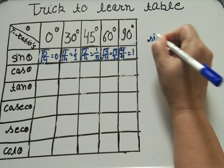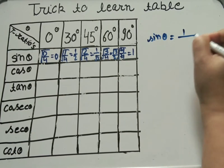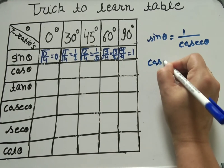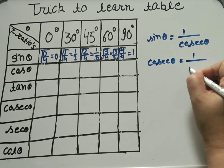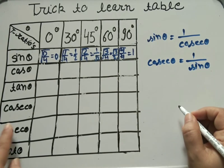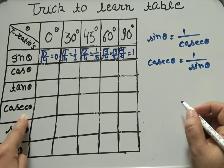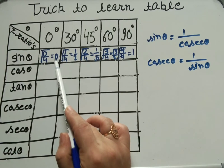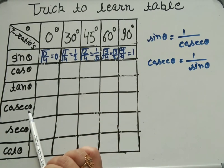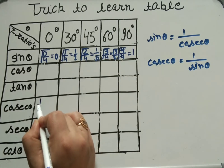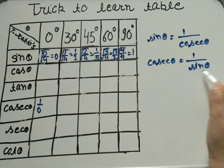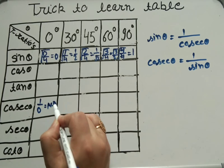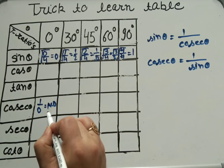In the last lecture we discussed that the reciprocal of sin theta is 1 upon cosecant theta, so cosecant theta equals 1 upon sin theta. For cosecant at 0 degrees: sin theta is 0, so cosecant is 1 upon 0, which is not defined (also written as infinity). For 30 degrees: 1 upon (1/2) — take reciprocal — value is 2.